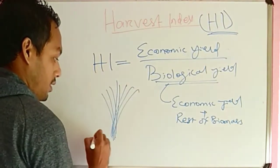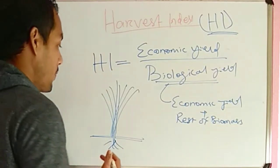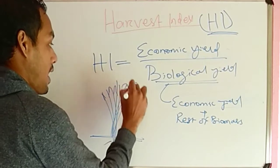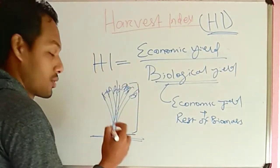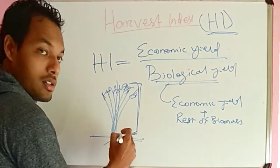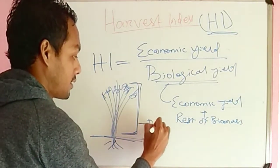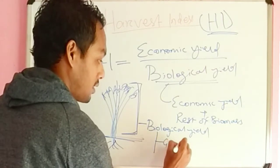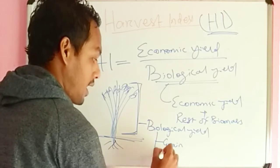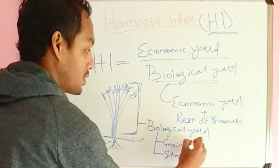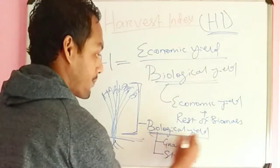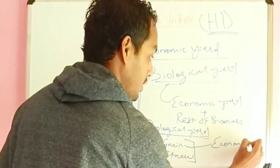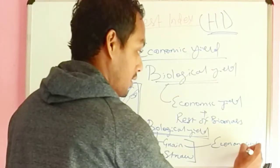Suppose this is a rice plant; these are the roots. The biological yield is the above-ground part — above the soil. Here are the panicles and grains. So the above-ground portion is the biological yield, which consists of grain and straw in case of rice, wheat, and other cereals. The grain is our economic part, which we consume and sell — that is the economic yield.